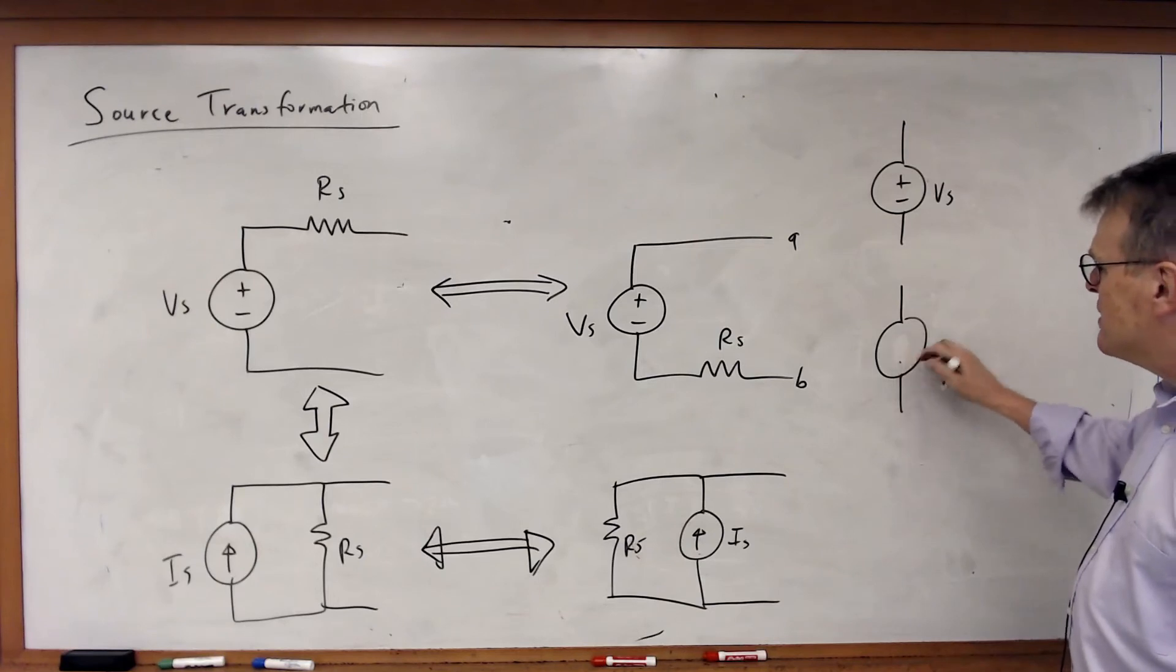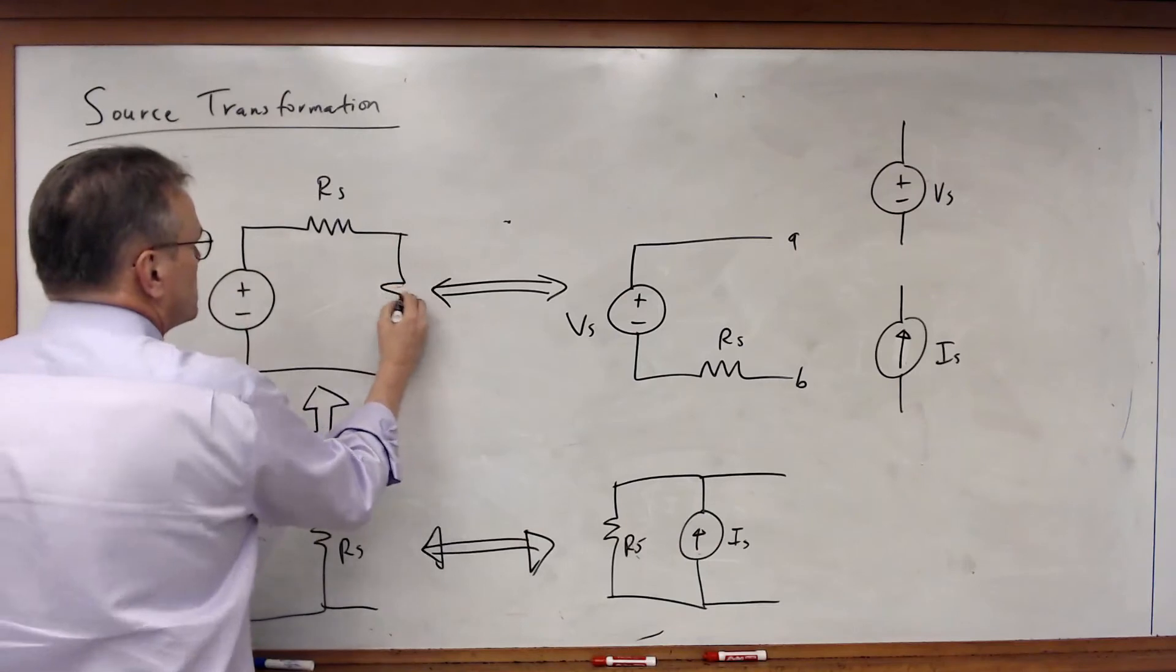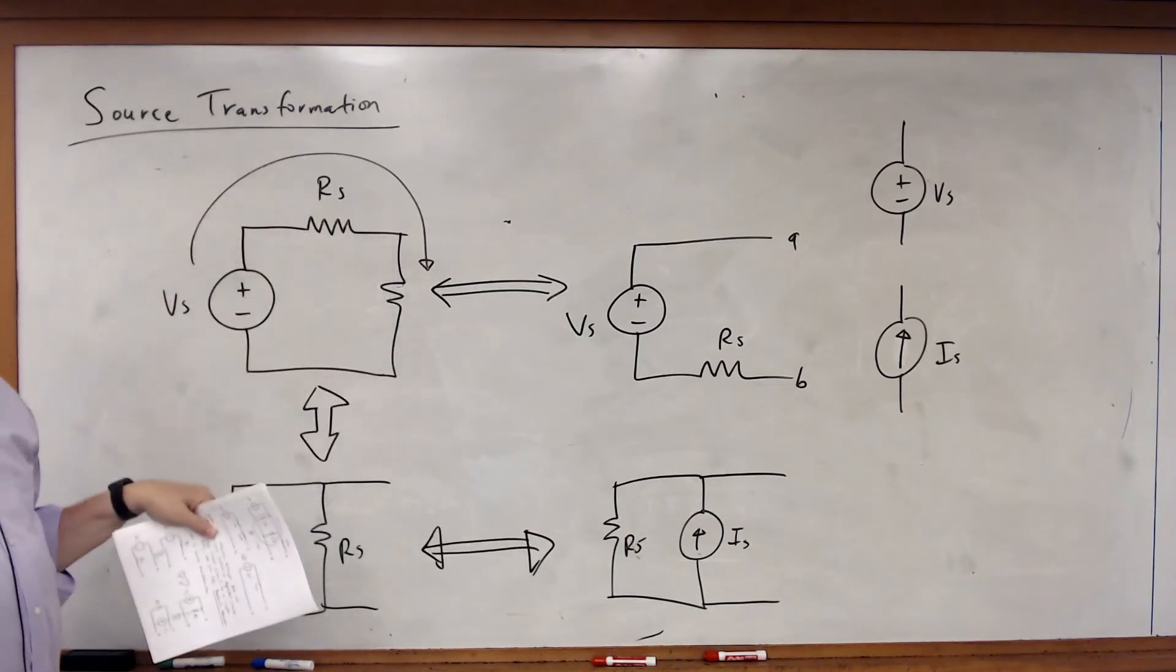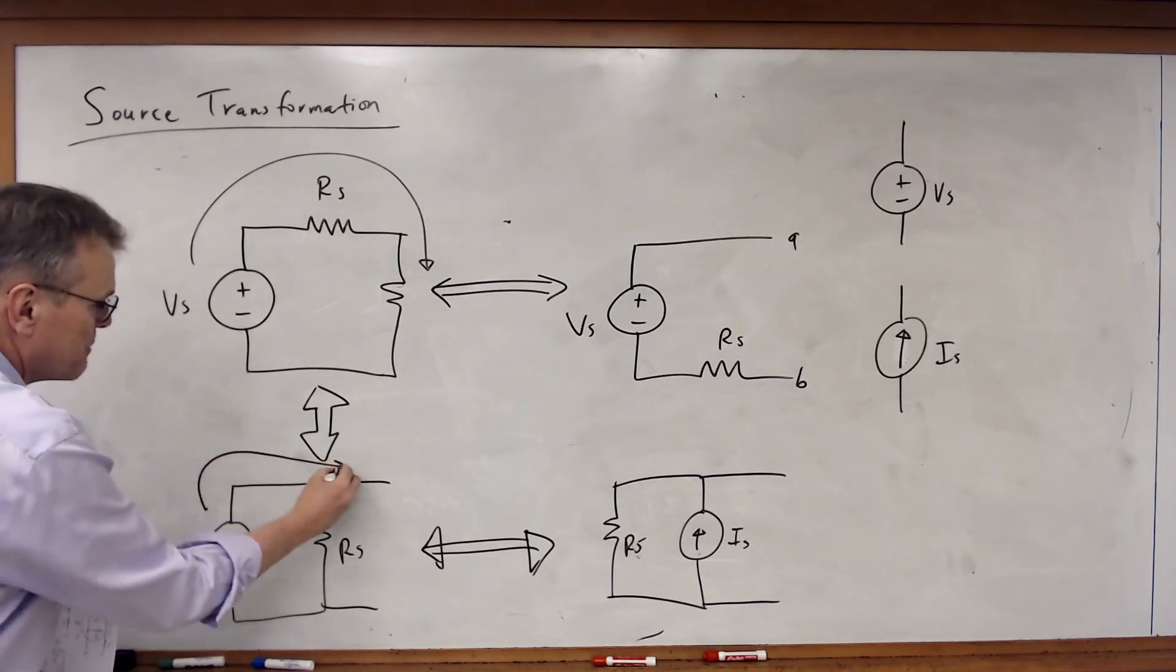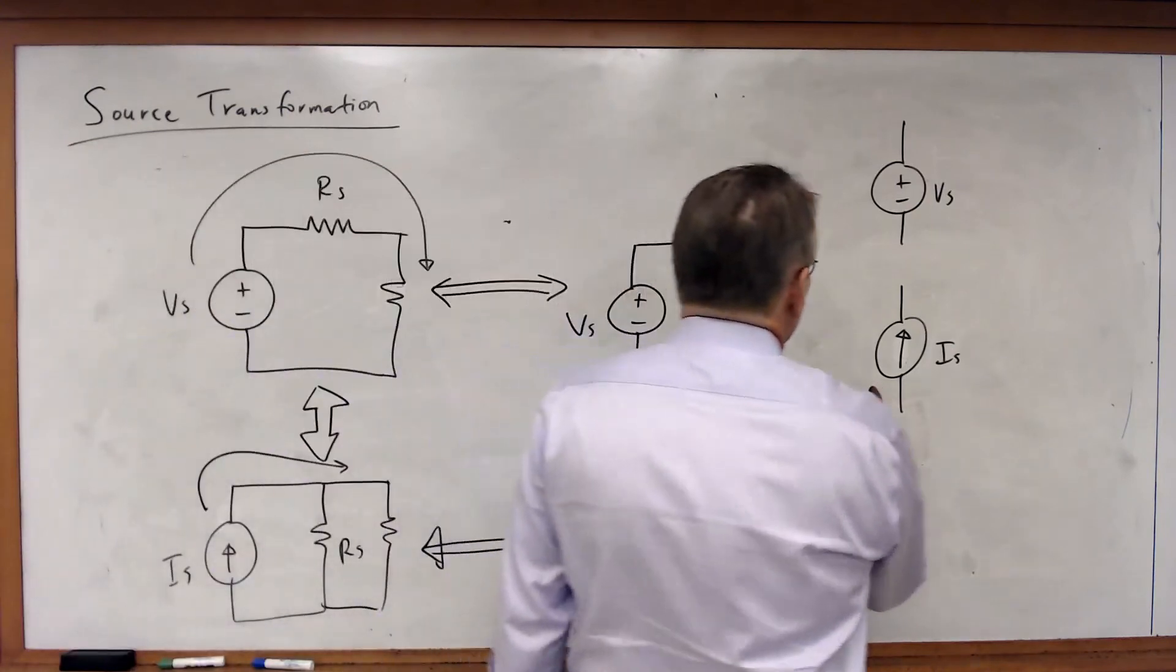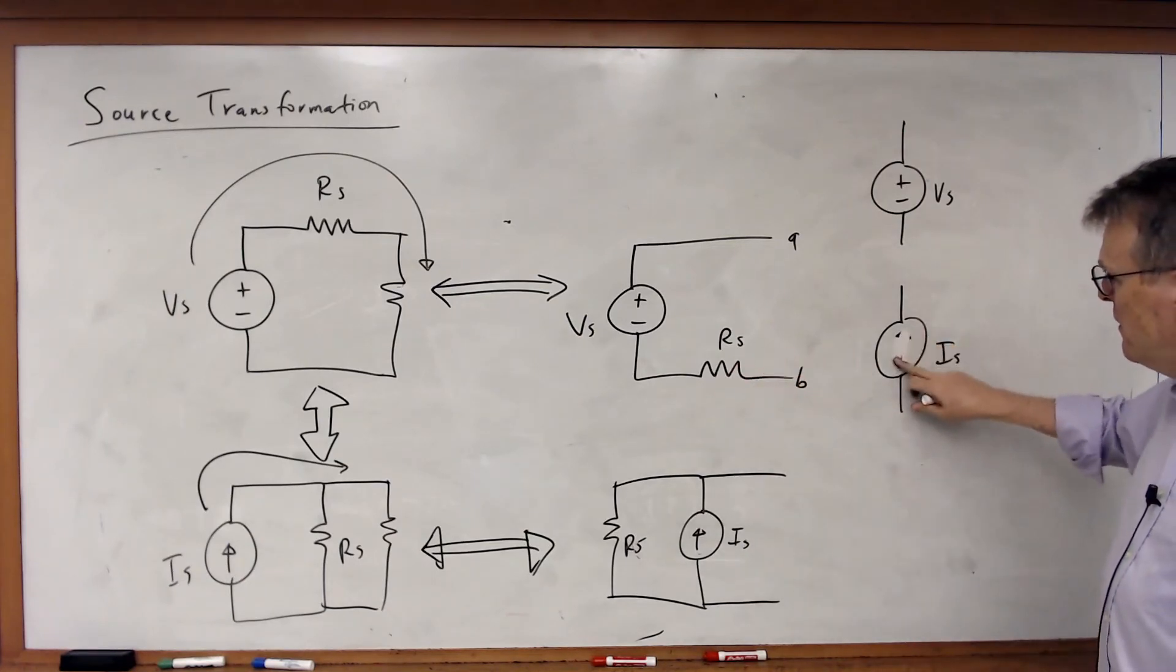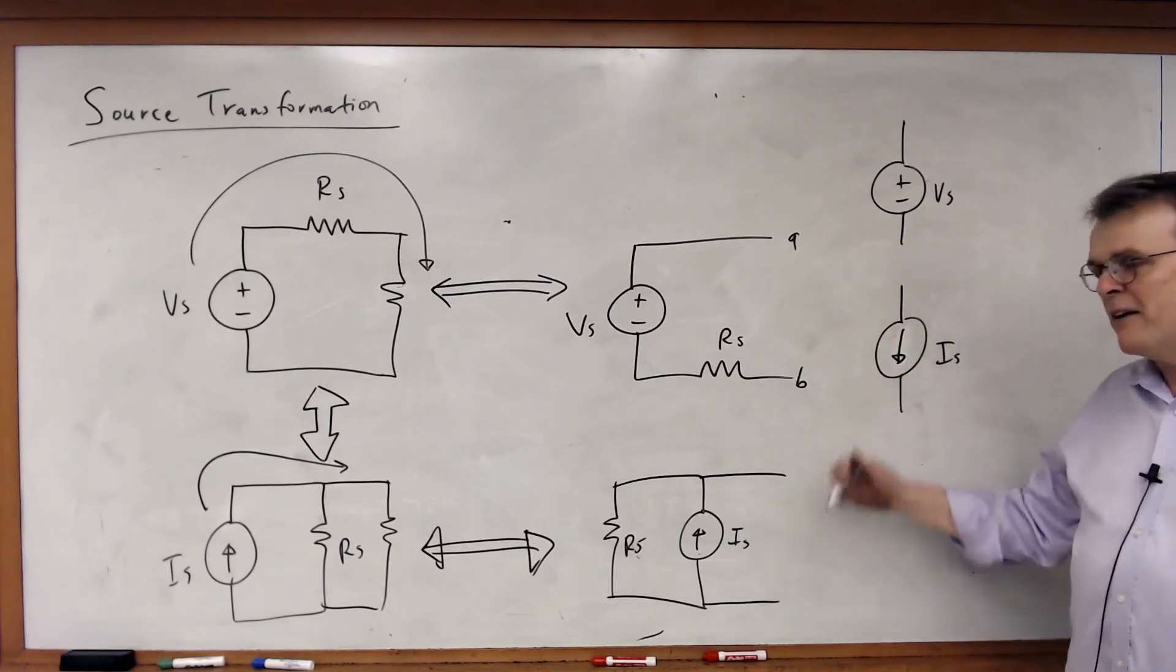In this case, Is must flow out because think about it. If I were to connect a resistor here, the positive current would flow in this direction around the loop. In that case, the source also has to force current in this direction, which means the source has to have a current that goes out relative to the positive end. So watch out for that because a common mistake students will do is when they do source transformation, they'll flip that upside down, and they wind up getting a wrong answer.